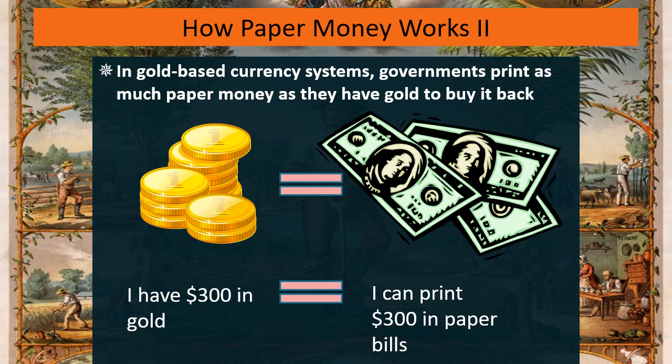So we've got two systems: a system where you have paper money not backed by anything, and a system where the money is backed by gold.